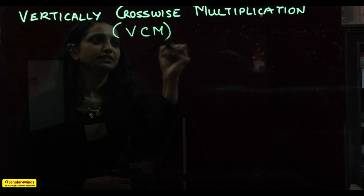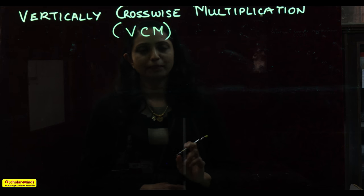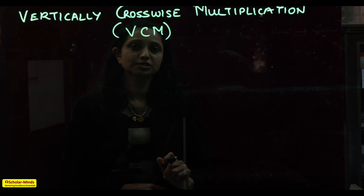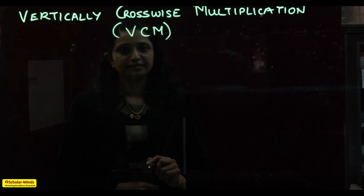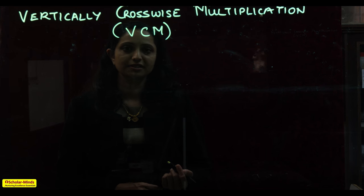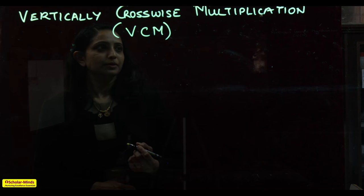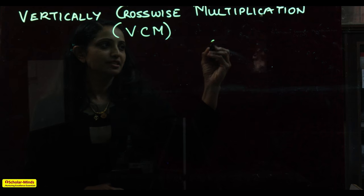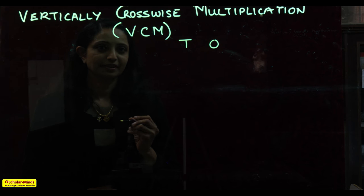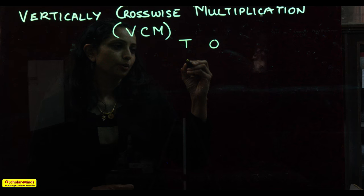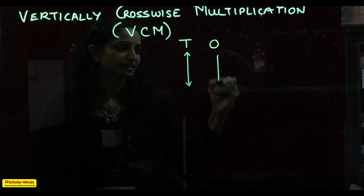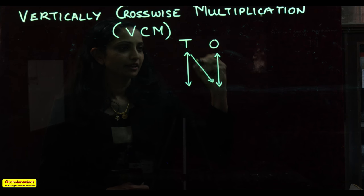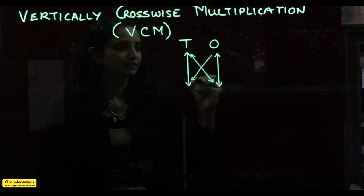In this method, we will separate this into two parts. The first part concentrates on multiplying two digits by two digits, and the next part on multiplying three digits by three digits. When we say vertically crosswise, we have digits in the ones place and the tens place. Vertically, we multiply these places separately, then we multiply crosswise and take the sum.